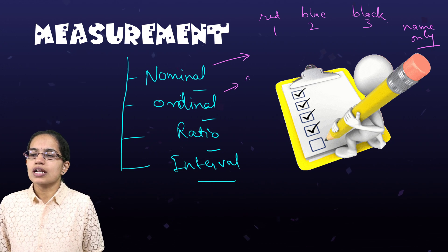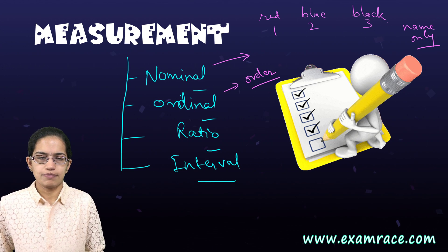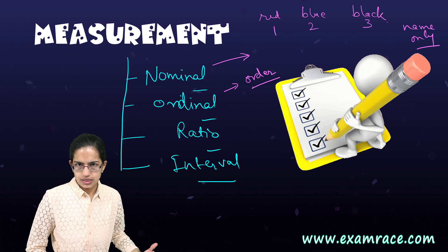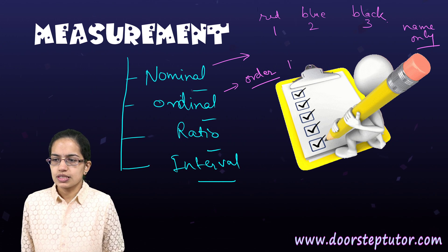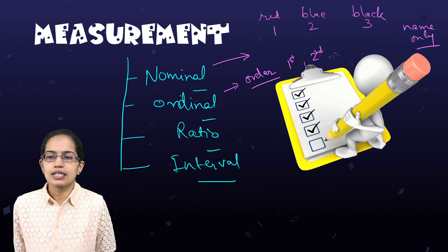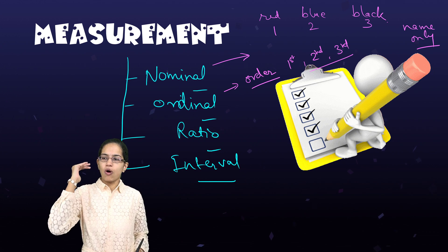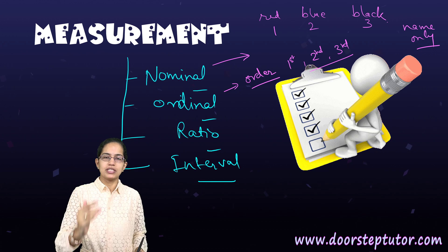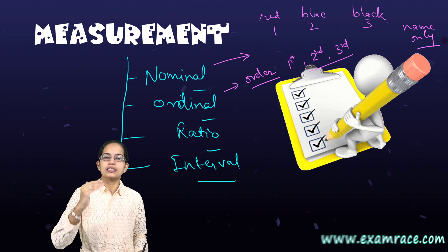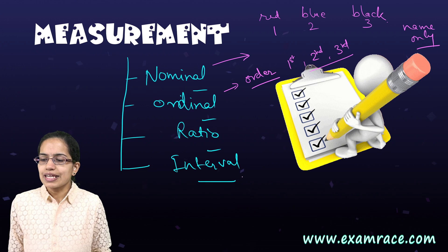Ordinal means you are trying to arrange those in order. So let's say there was a race, who came first in the race, who came second in the race and third in the race. And this is what you are trying to do when you are focusing on an ordinal measurement. You are trying to arrange them into order.